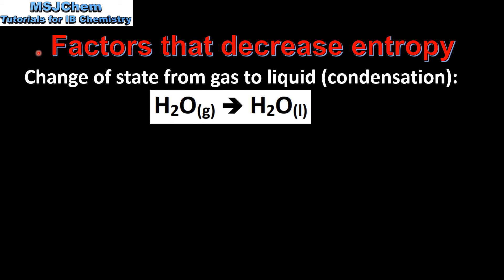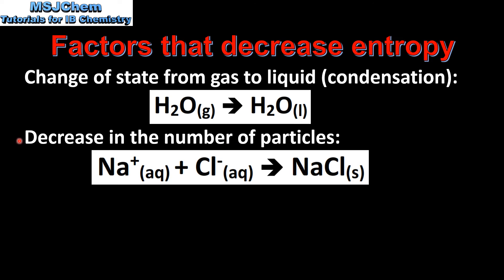Next we'll have a look at factors that decrease entropy. The first example is a change of state from gas to liquid, which is condensation. Here we have water as a gas condensing to form water as a liquid. Liquids have a lower entropy than gases, therefore we have a decrease in entropy. Next is a decrease in the number of particles: two moles of aqueous ions forming one mole of solid ionic product, which is a decrease in entropy.